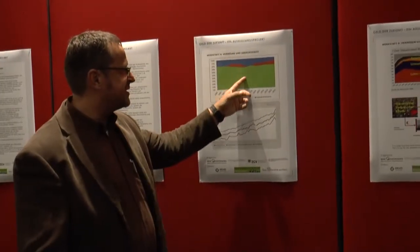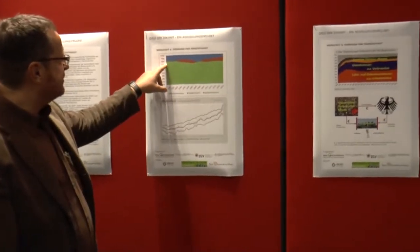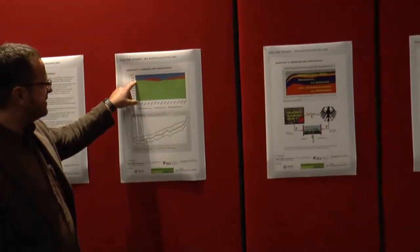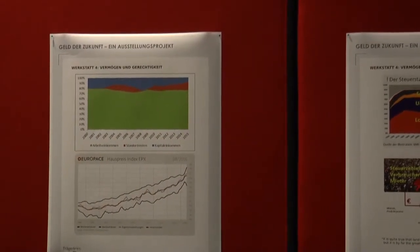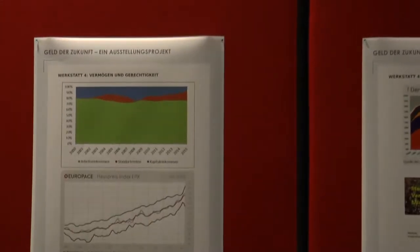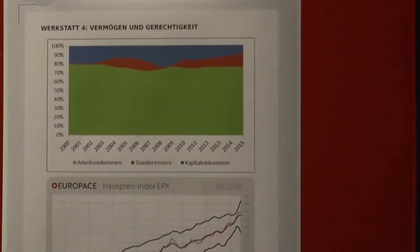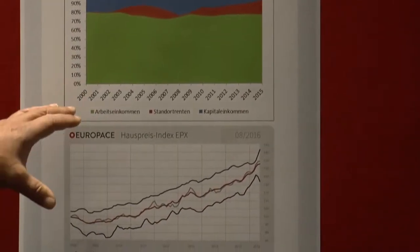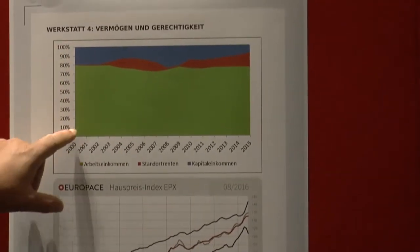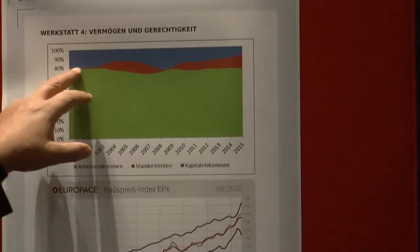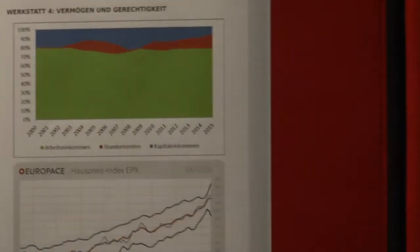Das hier soll die Einkommensverteilung darstellen, die funktionale Einkommensverteilung, die wir in Deutschland haben, ein bisschen verzehrt. Sie sehen das Grüne hier, das ist der Anteil der Arbeitnehmereinkommen am Volkseinkommen. Eigentlich knappe 70 Prozent, hier sind 80 Prozent – weil auch noch die rechnerischen Unternehmerlöhne mit einbezogen sind. Von 2000 bis 2015 ist der Anteil dieser Arbeitseinkommen am Volkseinkommen relativ konstant. Da hat sich nicht viel getan.